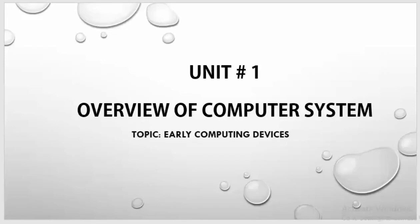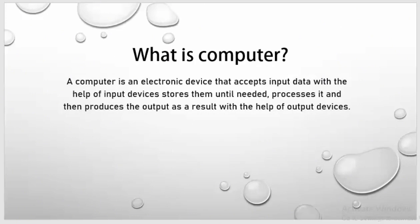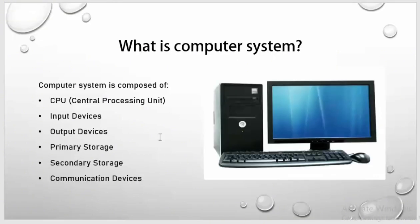Assalamu Alaikum everyone, welcome to my YouTube channel. Today's video is about overview of computer system, Unit 1, after board first year. Our main topic is early computing devices. First of all, we will discuss what is a computer. As you all know, a computer is an electronic device which accepts input data with the help of input devices, stores it or processes it, then produces output with the help of output devices. A computer system is basically composed of CPU, input devices, output devices, primary storage, secondary storage, and communication devices.